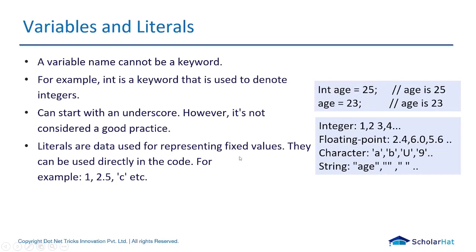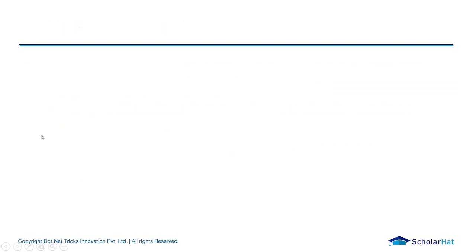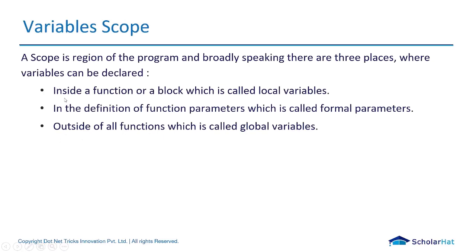Next we're going to see variable scope. Scope is a region of the program. Broadly speaking, there are three places where variables can be declared: inside a function or a block, which is called a local variable; in the definition of a function parameter, called formal parameters; and outside of the function, which is called a global variable.